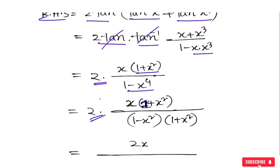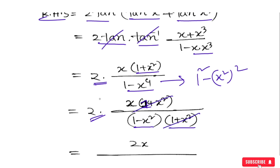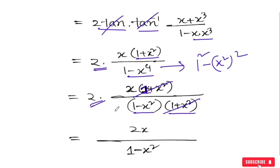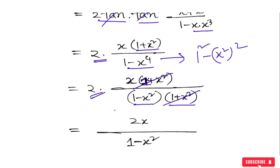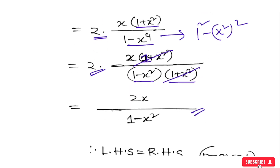And with that, we can take minus x square. We can take minus x square plus x square. As minus x square cancels with x², it becomes 1 plus x square, which equals 2x. So we have 2x or 2x and we have 1 minus x square — we have proved left hand side equals right hand side.